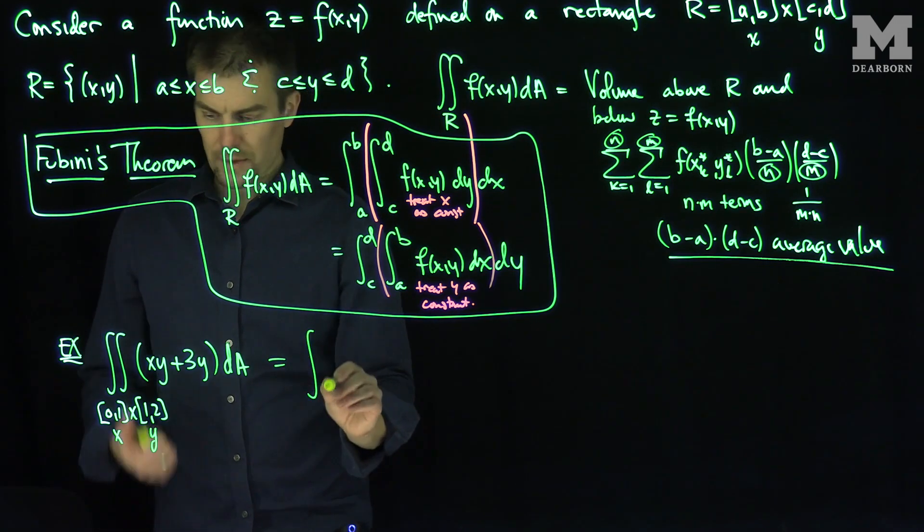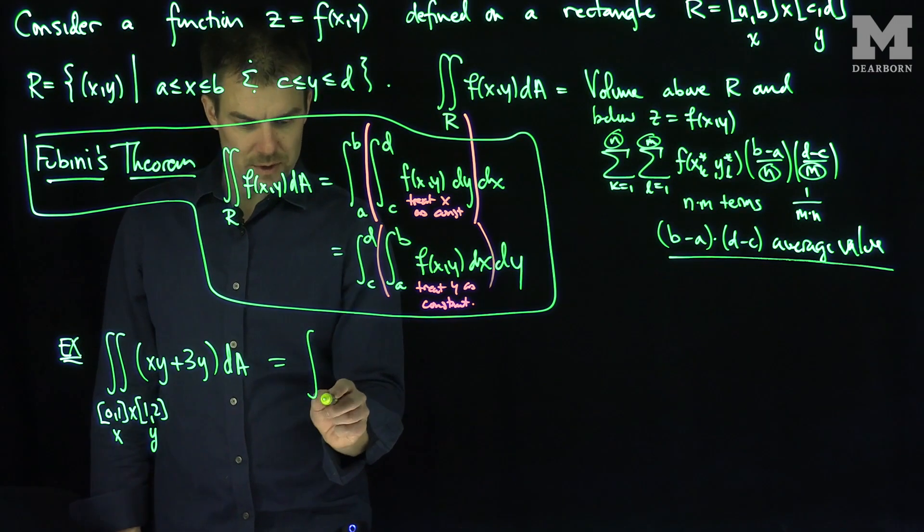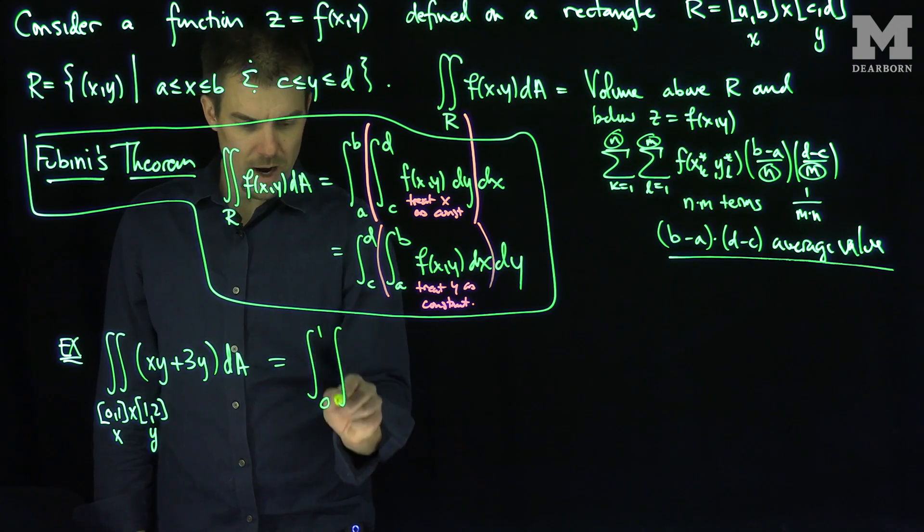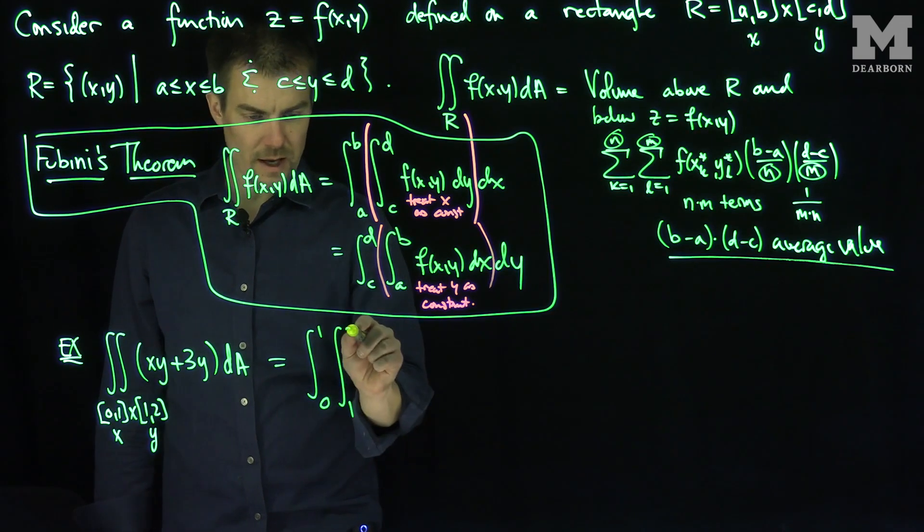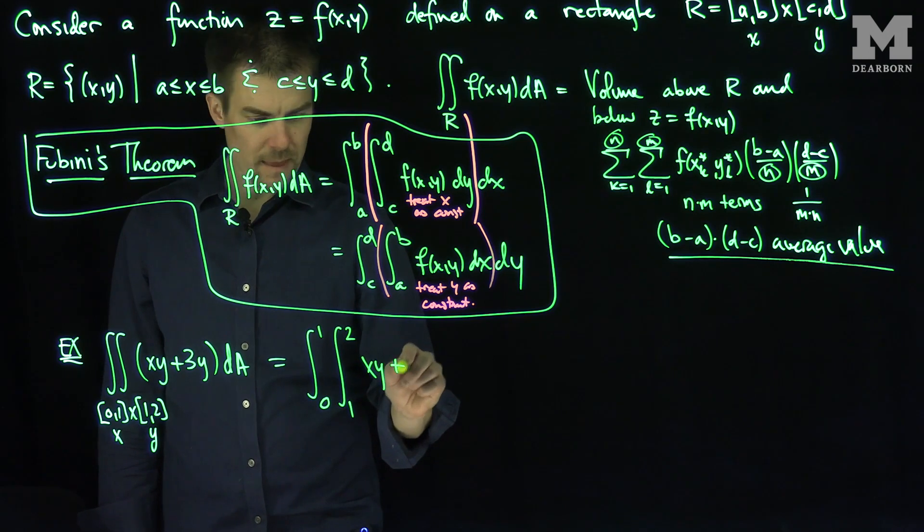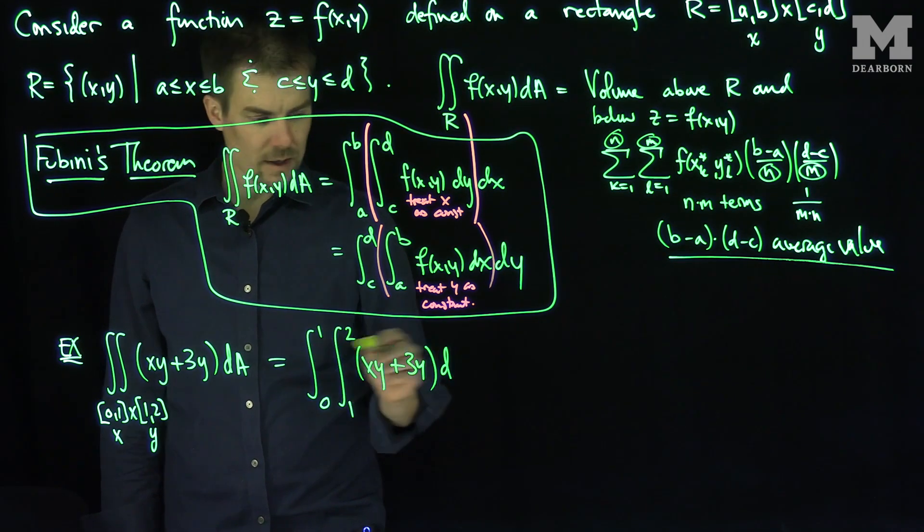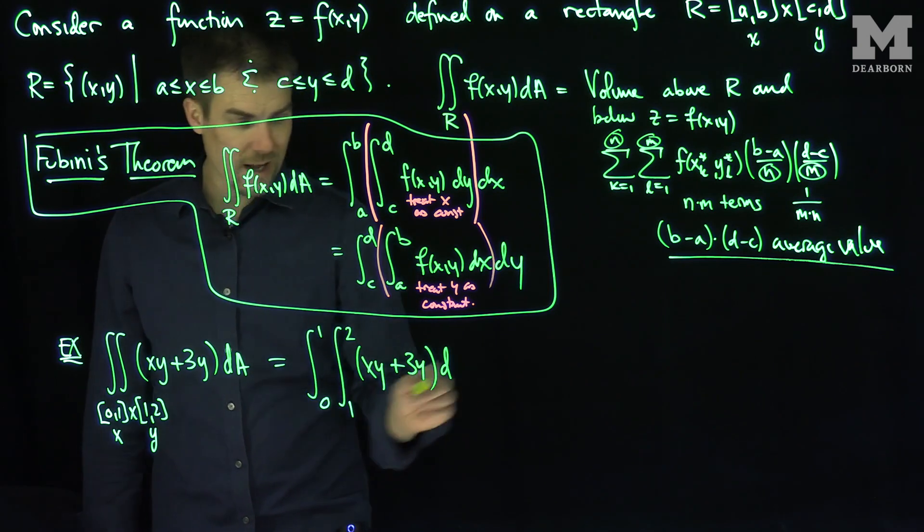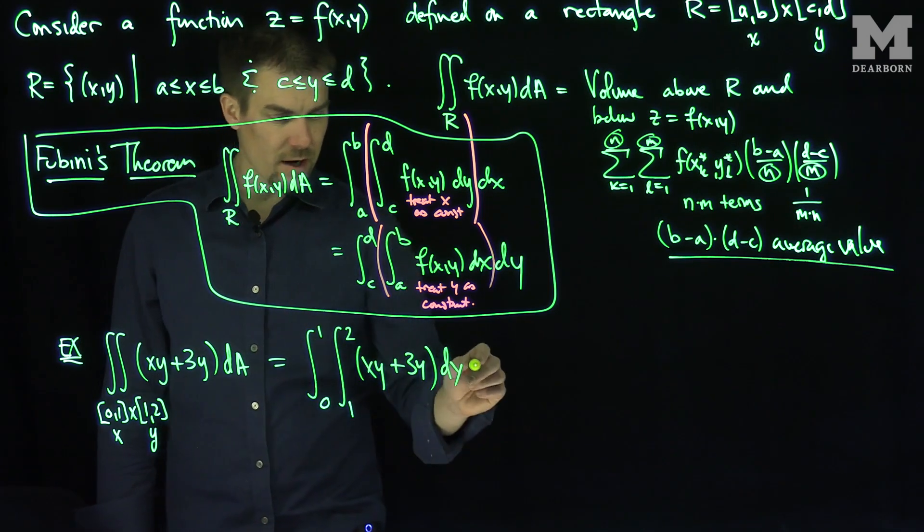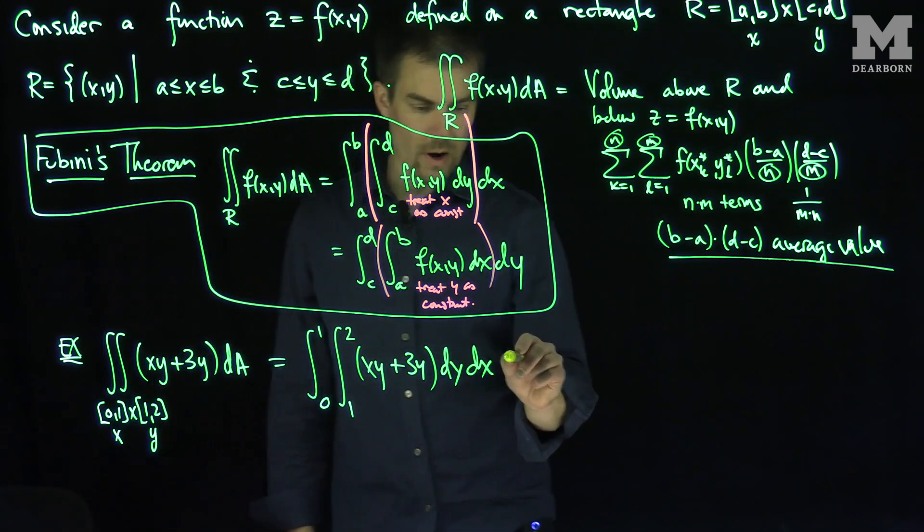Well, what I would immediately do is I would immediately apply Fubini's theorem. These are my x limits and these are my y limits over here. And so if we were to do this, we would say this is the integral x goes between 0 and 1, and y goes between 1 and 2, of xy plus 3y. The 1 to 2 are my y limits, so I put the y first, then I do a dx.